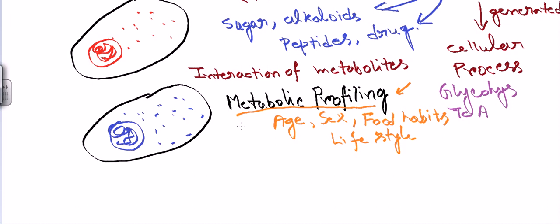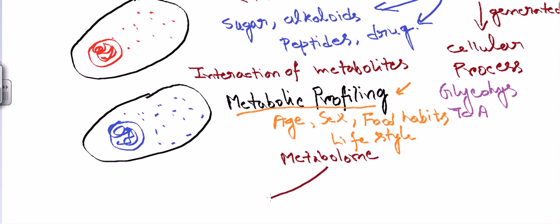This is a kind of projected application of metabolomics in the future, because this is a very new science developing day by day. The metabolome — the total component of all metabolites present in our body — can consist of two different types: one is endogenous and another one is exogenous.